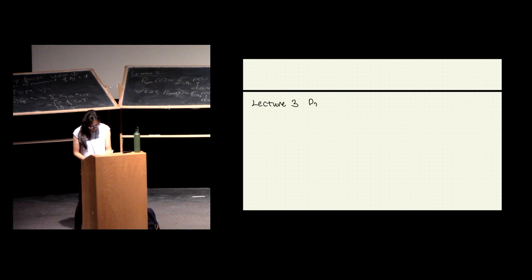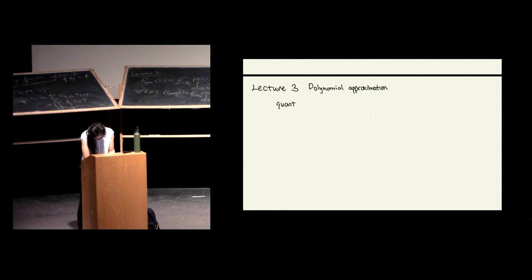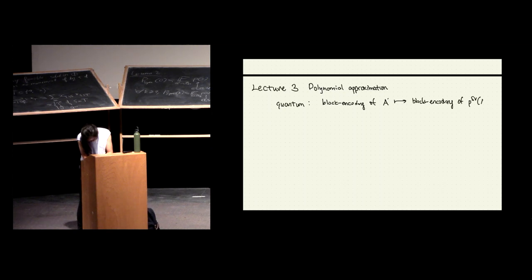In this lecture, I'm going to be talking about polynomial approximation. I'm going to move off track of the quantum algorithm stuff we were talking about before. The reason why I'm talking about this is that we established before that using quantum algorithms, you could get from block encodings of some matrix A to a block encoding of a matrix that's a polynomial applied to A.